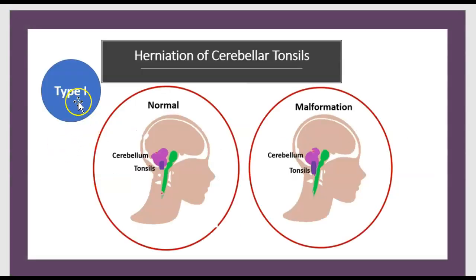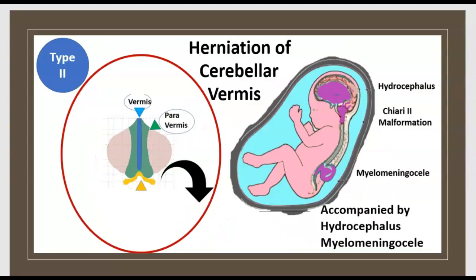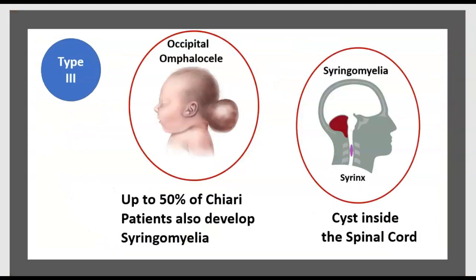There are 4 types of Chiari malformation: Type 1 — herniation of cerebellar tonsils; Type 2 — herniation of cerebellar vermis; Type 3 — occipital encephalocele and syringomyelia.